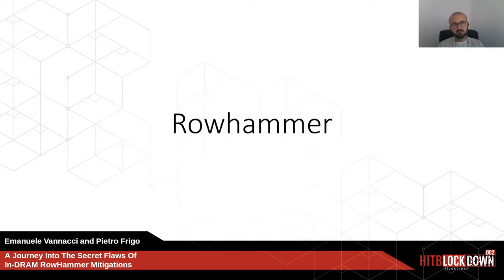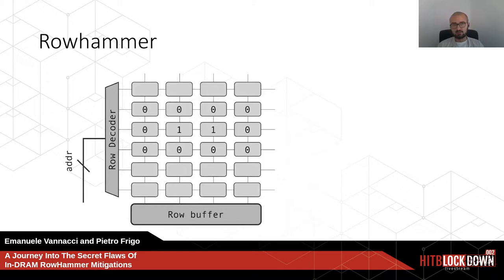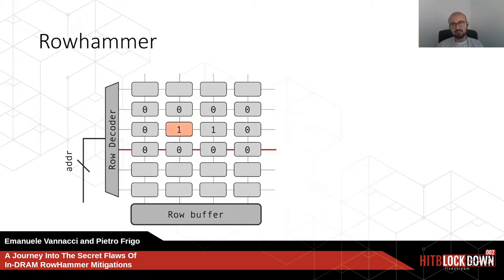What about Rowhammer? DRAM is supposed to retain data for at least 64 milliseconds, but researchers discovered that specific access patterns can trigger leakage much faster. The most common pattern, known as double-sided, consists of accessing two aggressor rows that sandwich a victim row in the middle. If you access them fast enough, you can trigger leakage in the middle row well within 64 milliseconds, potentially causing data corruptions if some cells are particularly vulnerable.